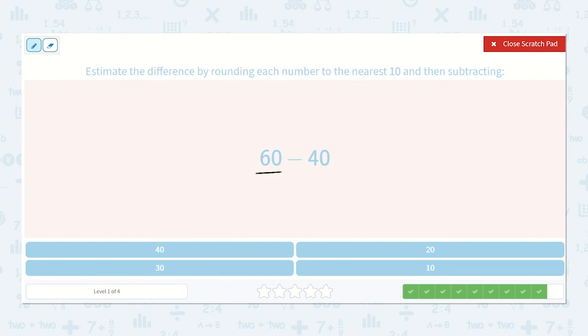These ones we don't need to round. 60 is already a 10, and 40 is already a 10. 60 minus 40 is equal to 20.